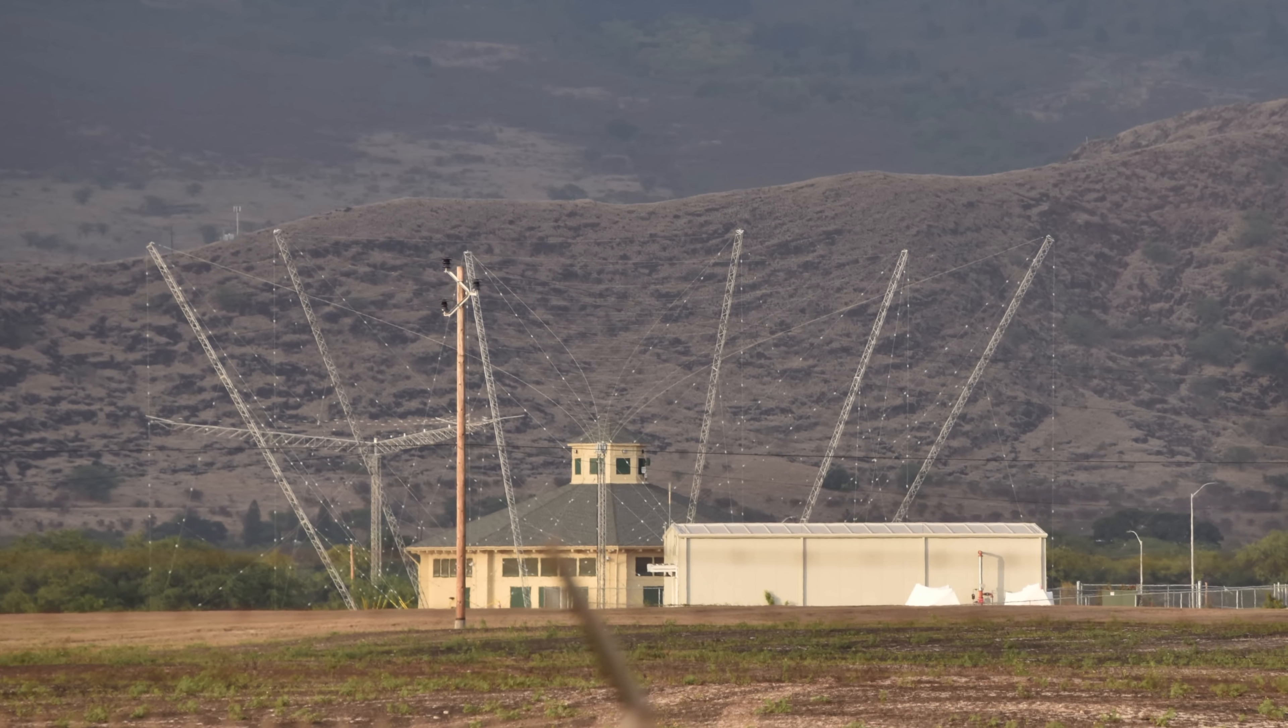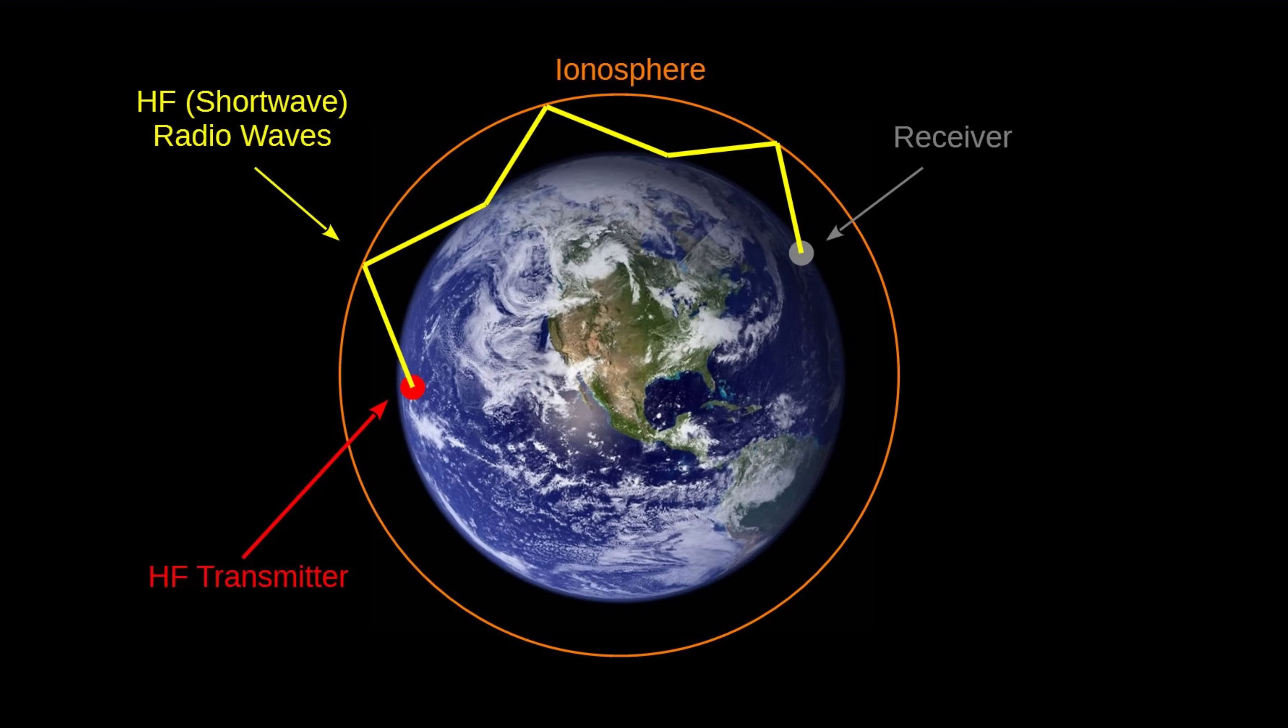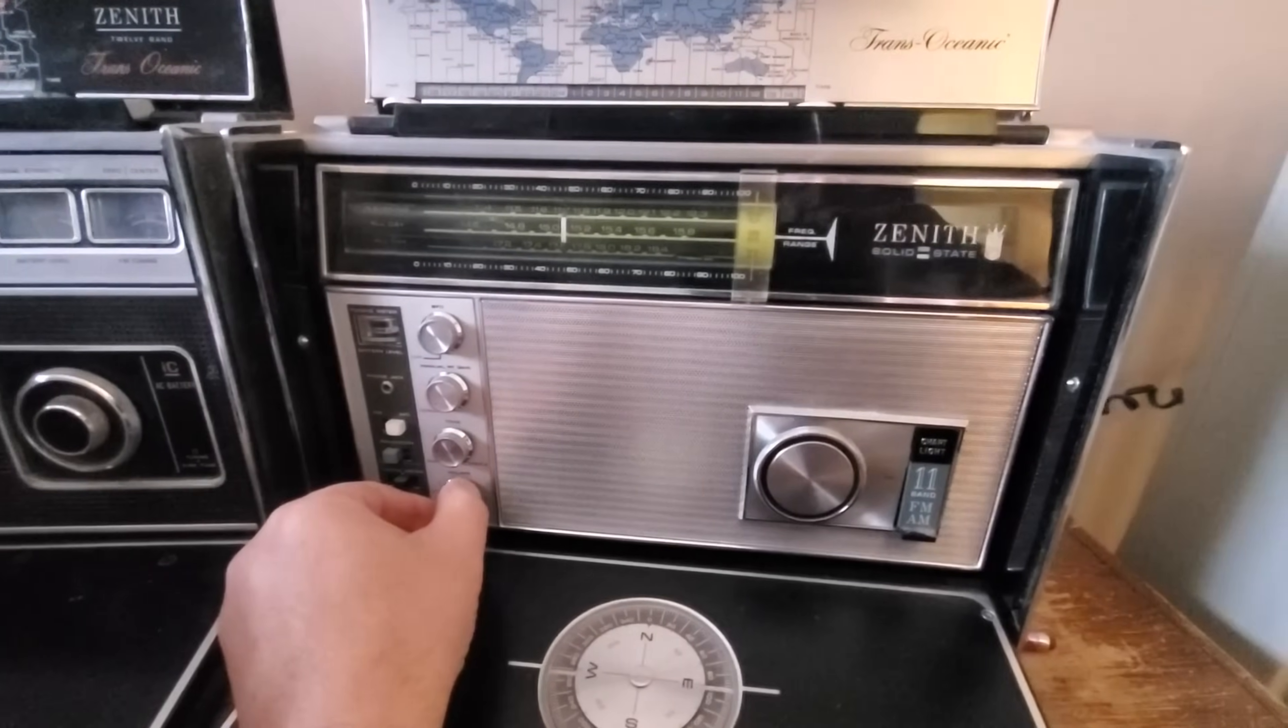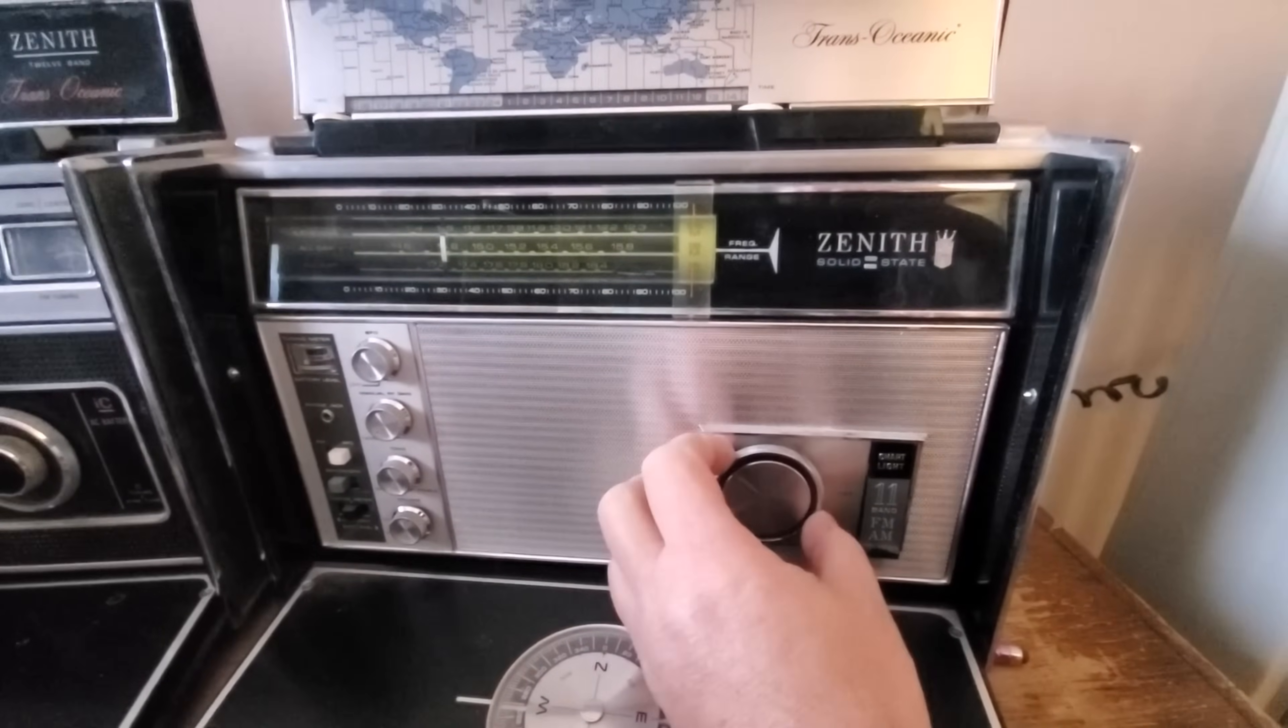That's 3 to 30 megahertz, which provides round-the-world communications by bouncing the radio waves back and forth between the ocean surface and the ionosphere. Before the internet, that's how we got news when we were in distant lands. And the consumer name for that was shortwave radio.